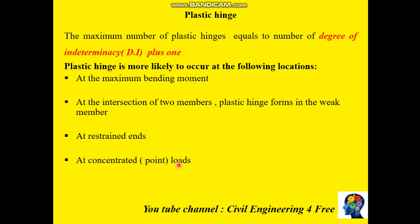Before determining the plastic moment, you have to know the concept of plastic hinge and collapsible load. Plastic hinges are formed at certain locations when rotation is large. The maximum number of plastic hinges equals the number of degrees of indeterminacy for that structure plus one. This plastic hinge is more likely to occur where you have maximum bending moment, at the intersection of two members such as a beam and a column.